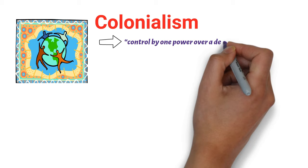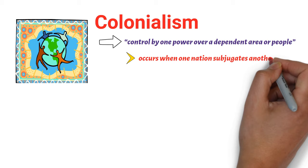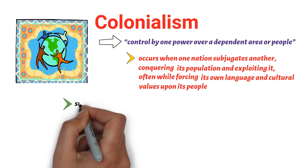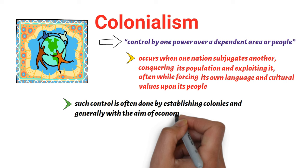What is colonialism? Colonialism is defined as control by one power over a dependent area or people. It occurs when one nation subjugates another, conquering its population and exploiting it, often while forcing its own language and cultural values upon its people. Also, such control is often done by establishing colonies and generally with the aim of economic dominance.